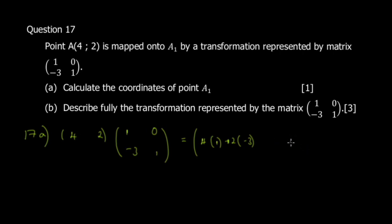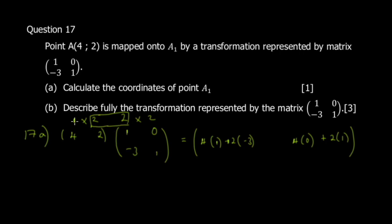Row by column: (4×1) + (2×-3) for the first entry, and (4×0) + (2×1) for the second. If you're unsure of the result order, note this is a 1×2 times 2×2, so the result is 1×2. You get 4 minus 6 equals negative 2, and 0 plus 2 equals 2. So A' is at (-2, 2).